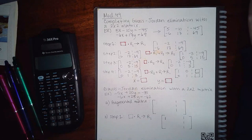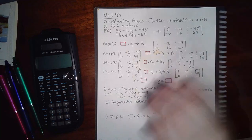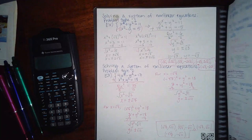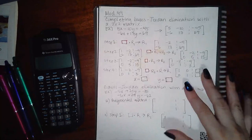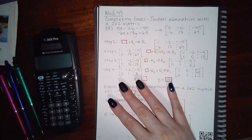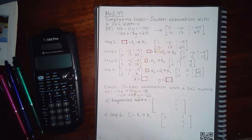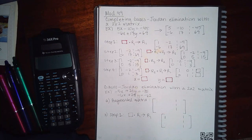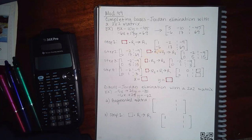We are here in module 49 and this is where we really start to get into matrices — solving equations using matrices. The first thing we need to discuss is how do you turn a system into a matrix. When a matrix comes from a system of equations, it's called an augmented matrix.